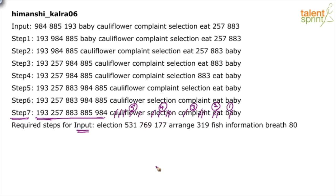Now that we've understood the logic, we also need to understand the step-by-step process. Go to step one and compare it with the input. You'll find that the number 193 has been brought to the first position and everything else has been moved aside. So in one step we are moving one number, and 193 is placed first because that is what is needed in the final output.